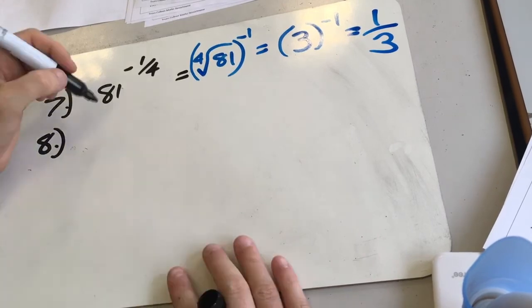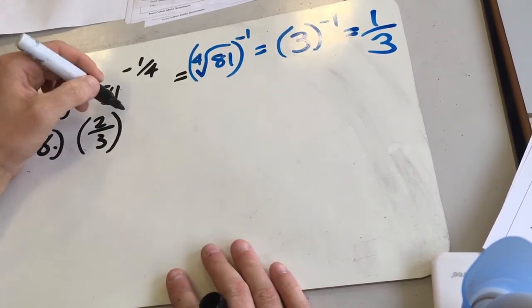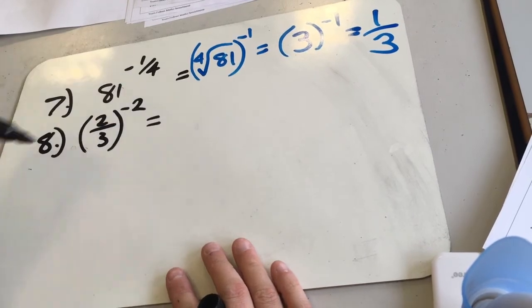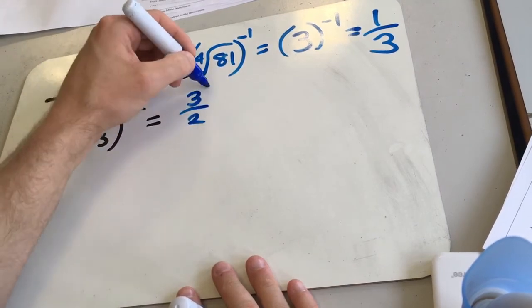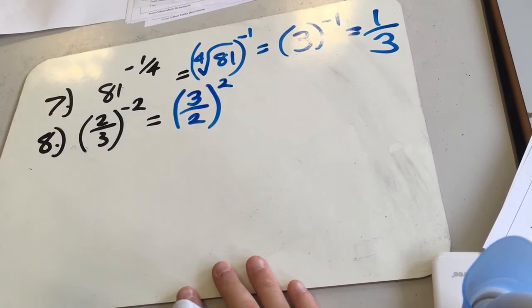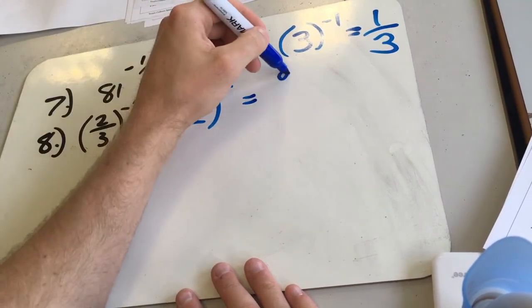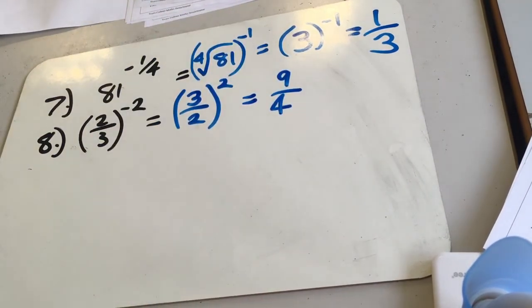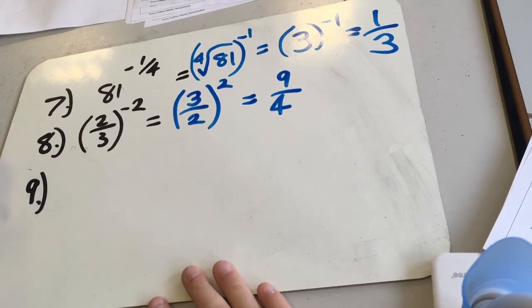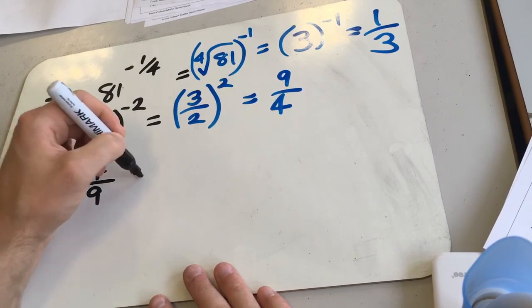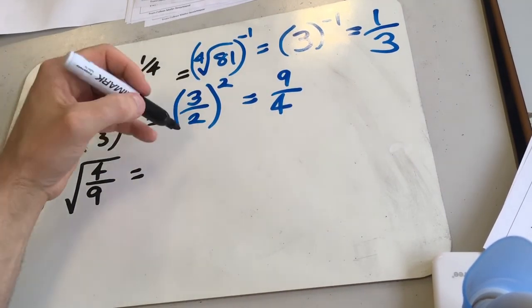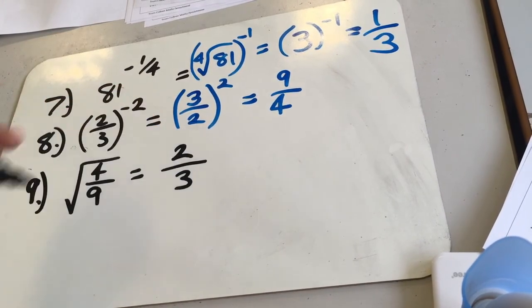Question 8, we've got 2 thirds to the power minus 2. So again, we can do it in either order. Let's use the minus bit first this time, so we're going to take the reciprocal of our fraction, which means we're going to flip it. So we get 3 over 2 to the power 2, because the minus sign has been used now. Now we're going to square everything, so we get 9 over 4 for that one. And lastly, question 9, we've got the square root of 4 over 9, which really is a third question. So you can root the top and get 2, root the bottom and get 3.